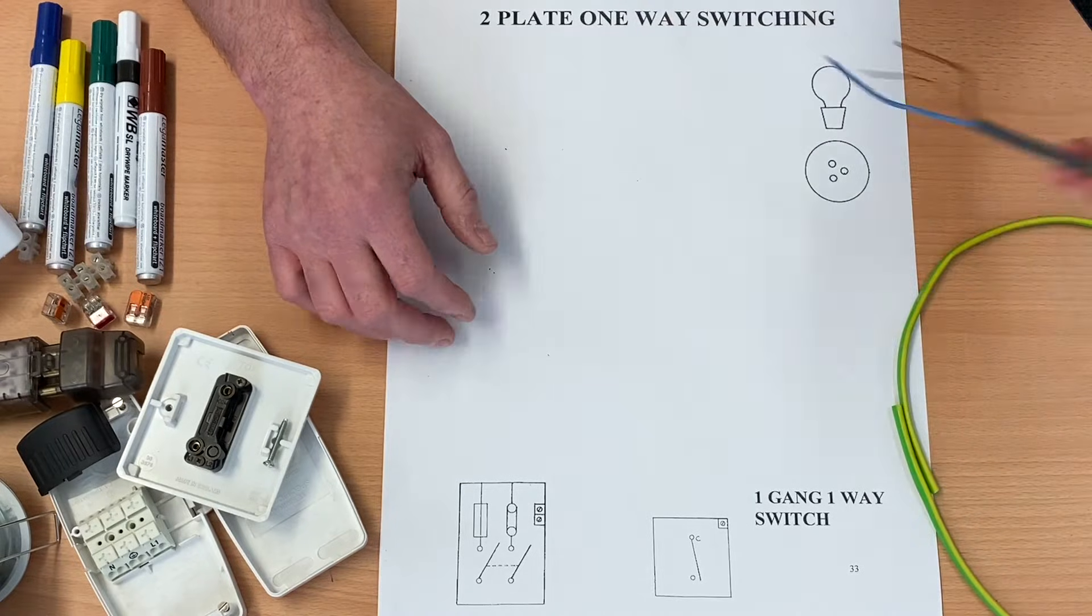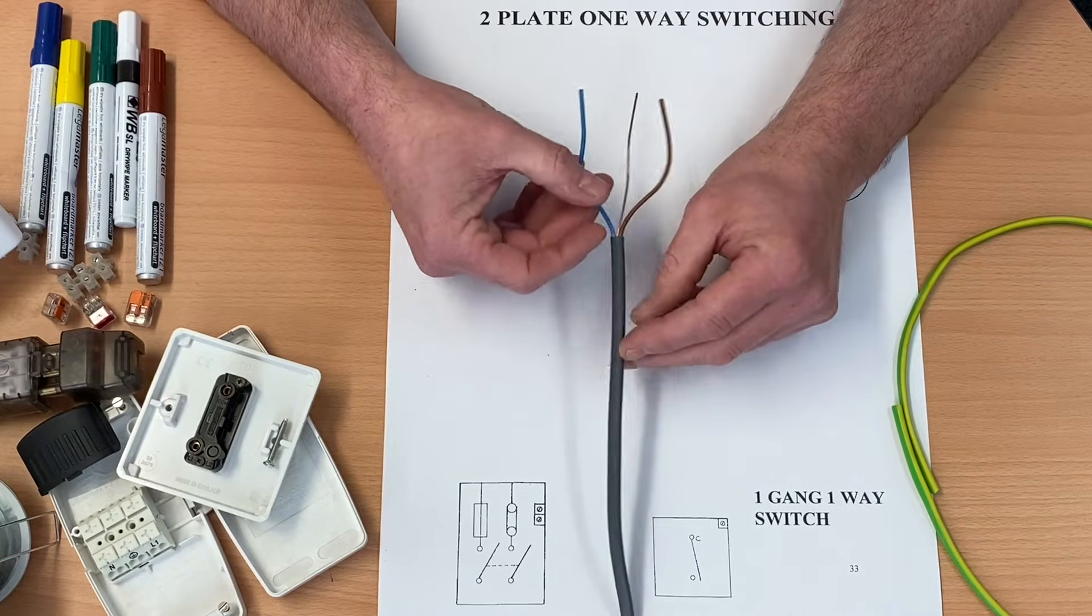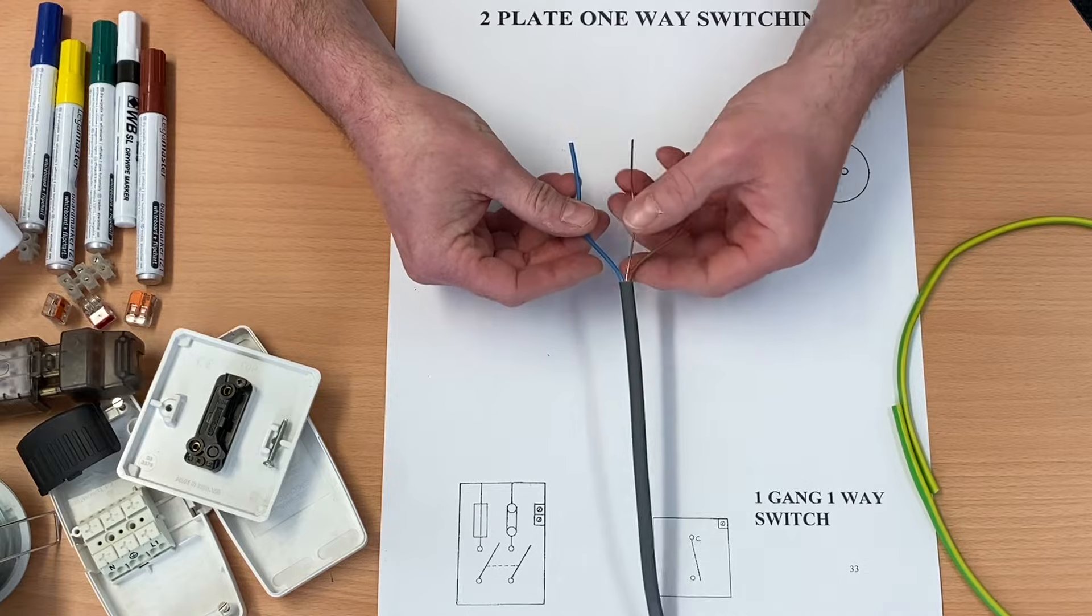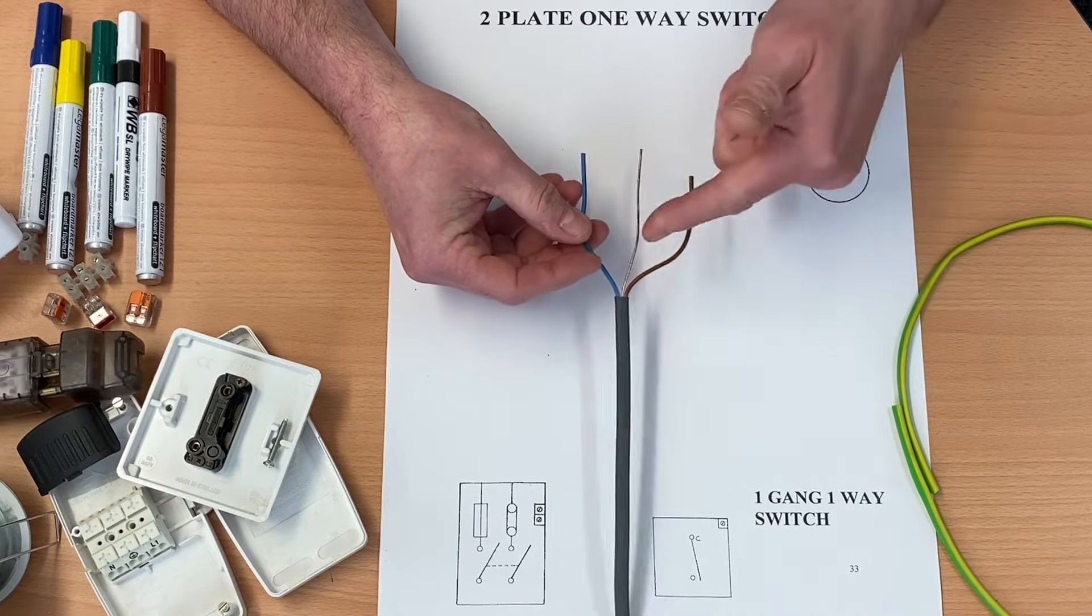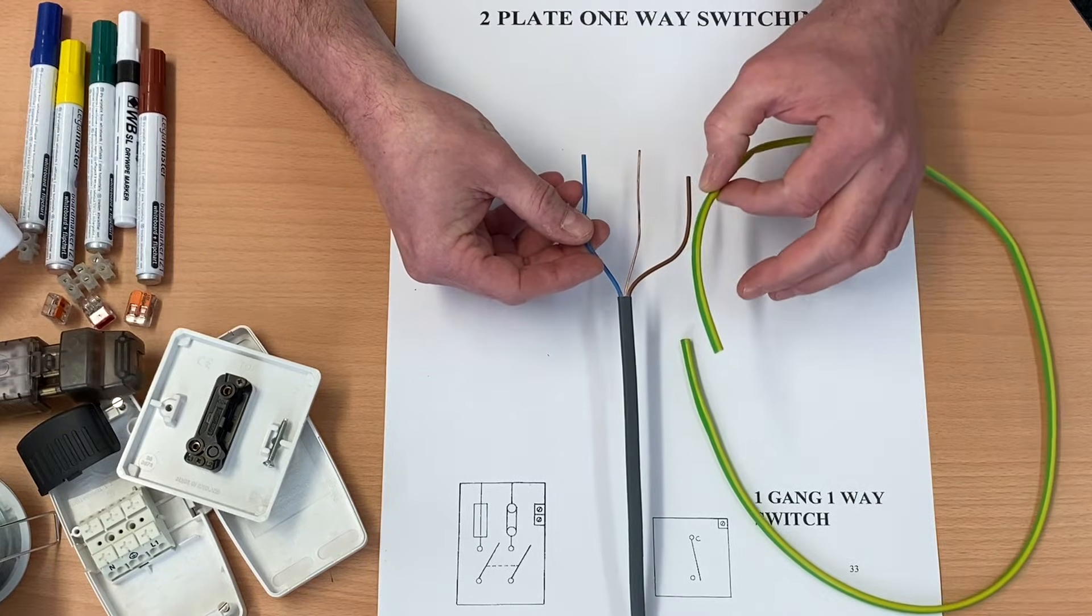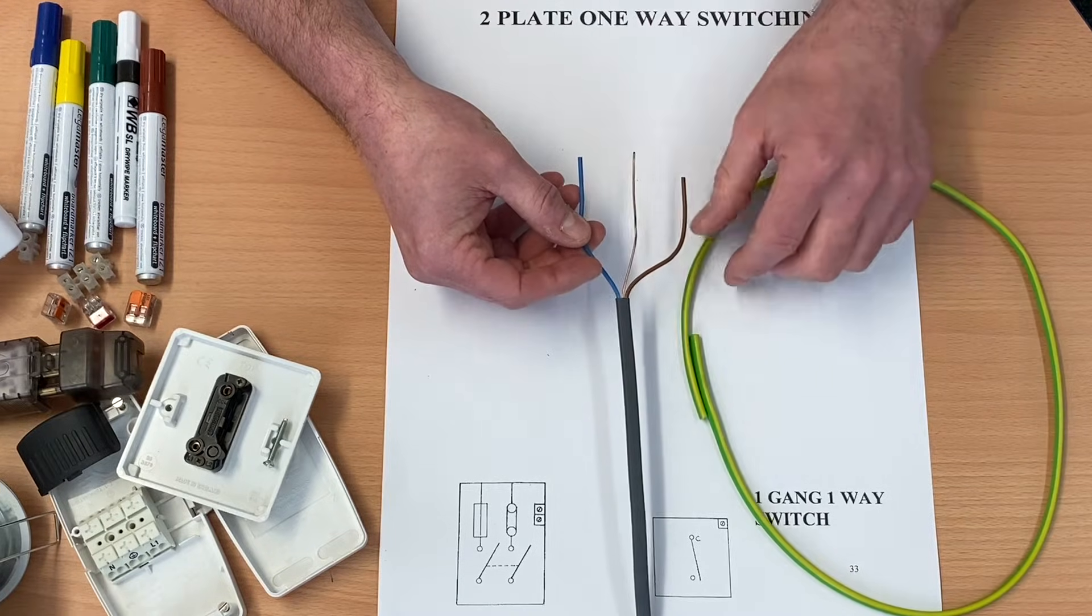So as always for our lighting circuits at college, we're going to be using one millimeter squared PVC twin and CPC cable, brown, blue, and a bare conductor, which we'll identify on the drawing with green and yellow sleeving with a green and yellow pen.